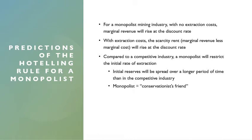Initial reserves will be spread over a longer time period because the monopolist is withholding some extraction due to their market power. They'll still exhaust their entire resource, but over a longer time period. In this sense, a monopolist is considered a conservationist's friend. Why? Oil produces negative externalities in terms of pollution. If you have a monopolist oil producer, they'll produce less oil today than in a competitive market, meaning less oil for consumption and higher prices — which is actually what we want from an environmental perspective, even though it's happening through monopoly power rather than government taxes.